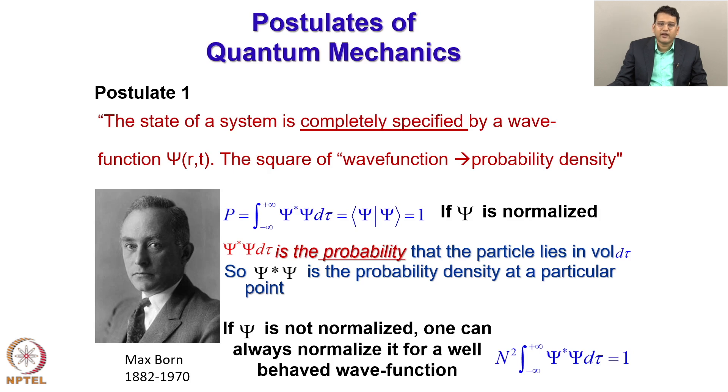And this postulate is related to the work of Max Born, which is called the Born interpretation. In this case, psi star psi d tau is related to a probability, and because it is a probability, the total value if I integrate from minus infinity to plus infinity will be 1 if psi is normalized. Now, psi star psi d tau is the probability that the particle lies in the volume d tau. So, psi star psi is the probability density at a particular point.